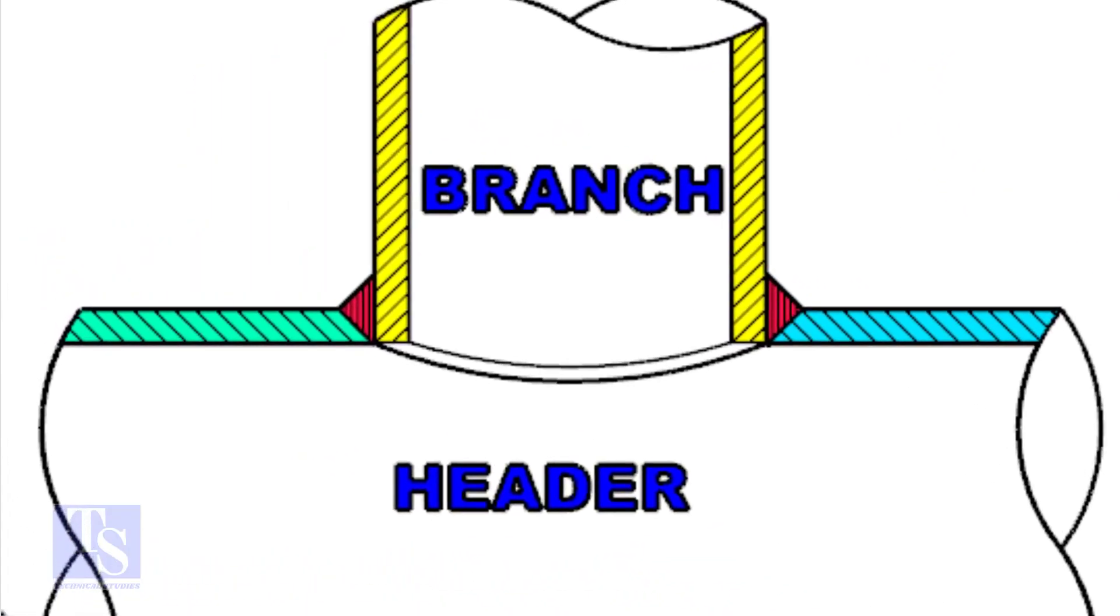Look at the stub-in joint. The bevel is prepared on the header, and the branch pipe is in the header.